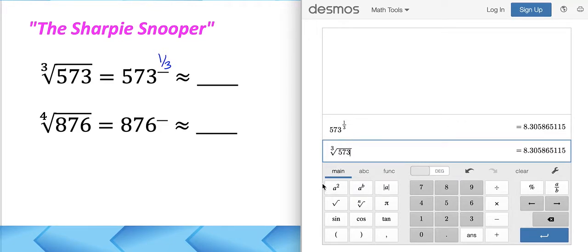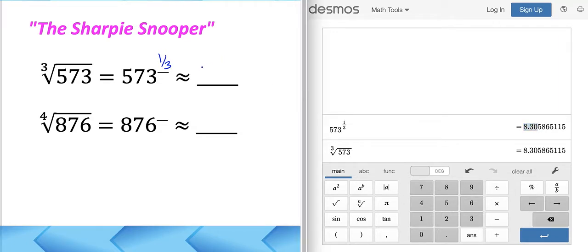So 573 to the one third power or the third root of 573 is, I think I want you to do it to the nearest tenth. Actually take it back. I think the directions say nearest hundredth. So the nearest hundredth, we would round the zero up to a one. So we would say 8.31.